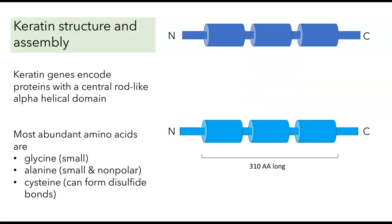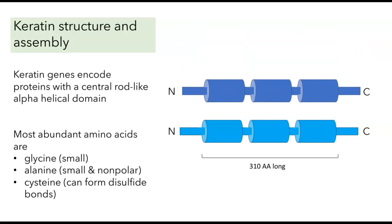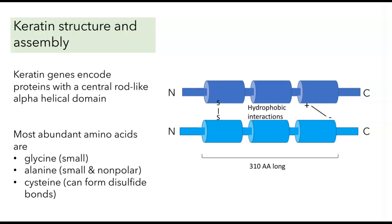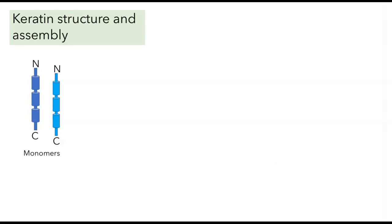This led to the model that in order to get keratin assembly, one acidic and one basic subunit must come together to form a dimer, and those dimers are held together by disulfide bonds between the two subunits, as well as by hydrophobic interactions and by ionic interactions. By stopping their test tube experiments at various times after mixing, researchers were able to propose a stepwise model for keratin assembly.